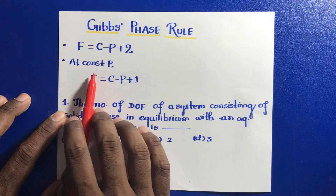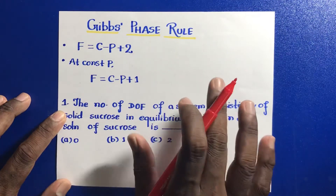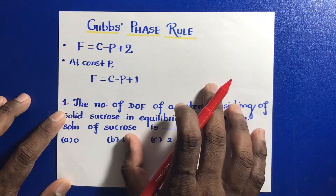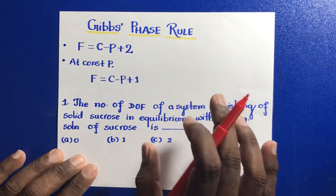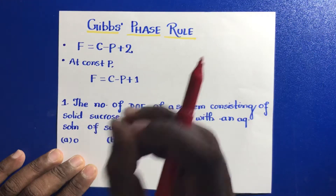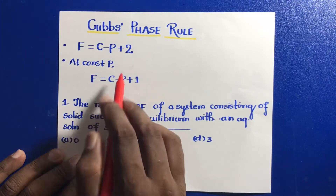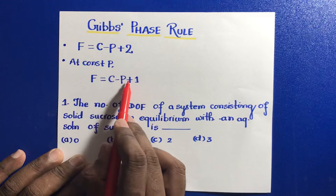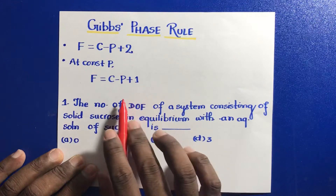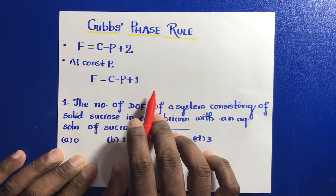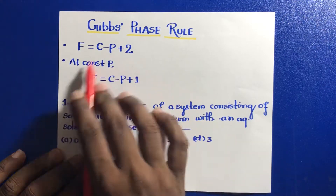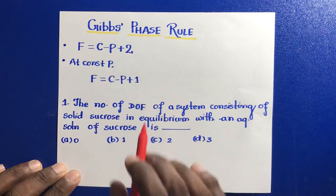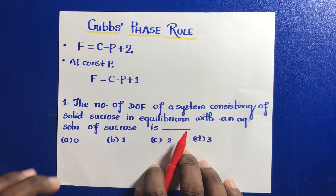Now, in material science applications, we deal with the phase changes of different solid structures at constant pressure. So basically, one intensive variable becomes less. We have to subtract 1, and now degree of freedom becomes F equal to C minus P plus 1. This phase rule is called the condensed phase rule, which is widely used for metallurgical equilibrium.